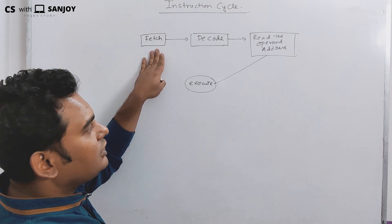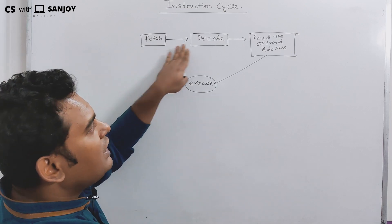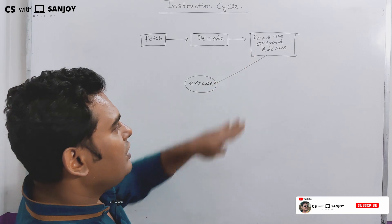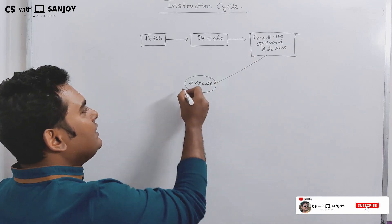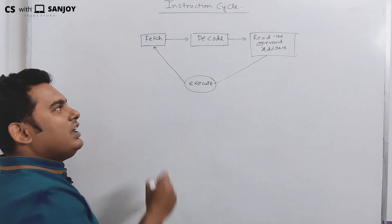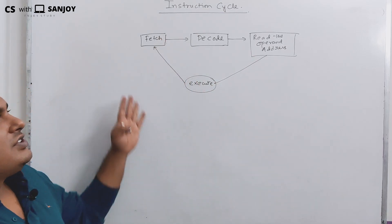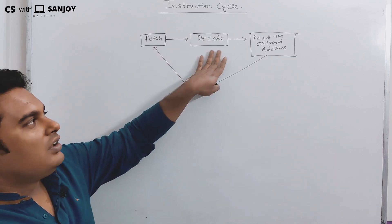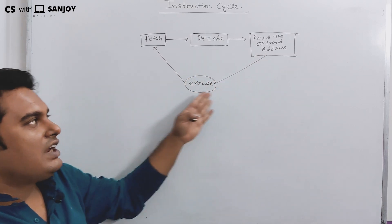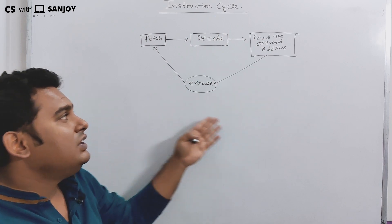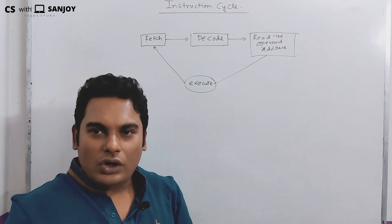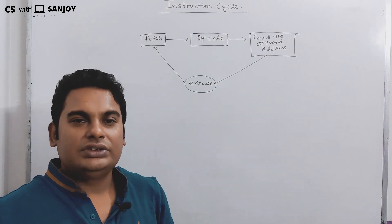So first, fetch the instruction from memory. Then decode the instruction. Then read the operand address. And then execute. Again, read the operand address, and execute. This repeats sequentially.